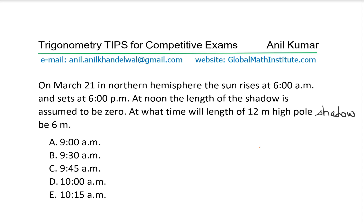At what time will the length of a 12-meter high pole's shadow be 6 meters? The height of the pole is given as 12 meters. That's the pole. And we want the shadow to be 6 meters — if I draw it like this, this shadow length is 6 meters. So that is the question for you.